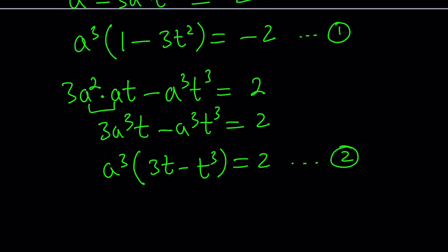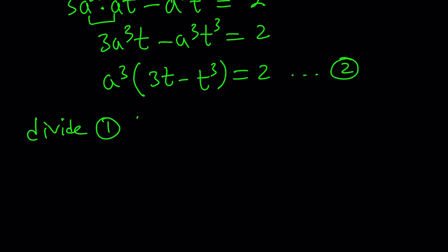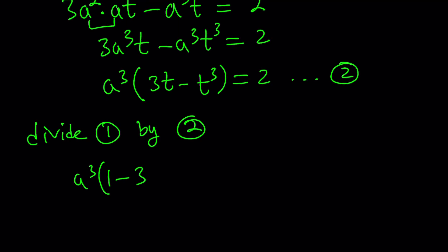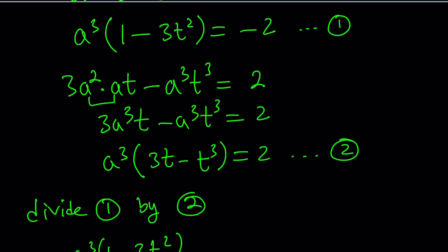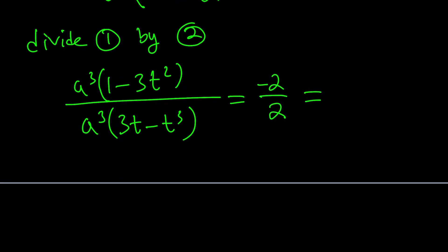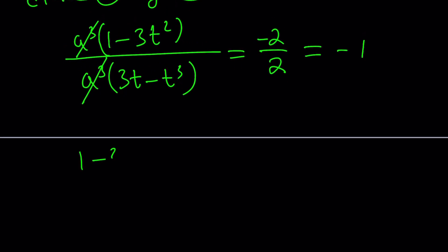3a²b becomes 3a²·at, minus b³ becomes -a³t³, equals 2. Simplifying: 3a³t - a³t³ = 2, or a³(3t - t³) = 2. That's our second equation. What can I do with these two equations? Both have a³ on the outside, so I can divide equation 1 by equation 2.